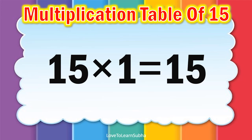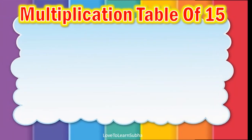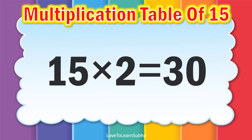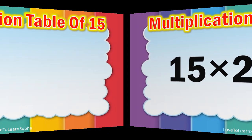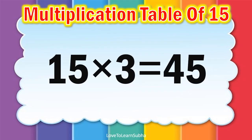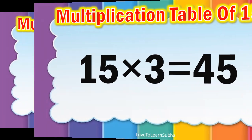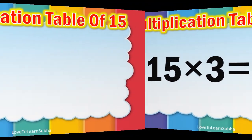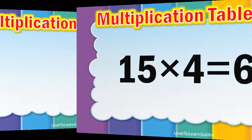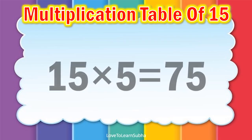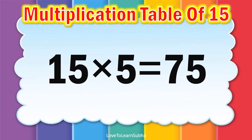15 ones are 15, 15 twos are 30, 15 threes are 45, 15 fours are 60, 15 fives are 75,